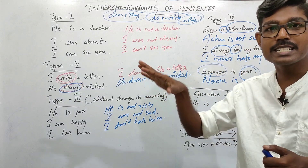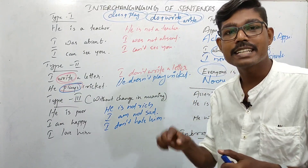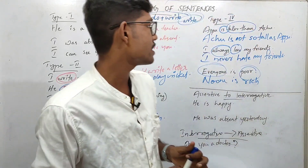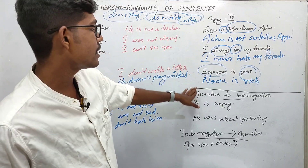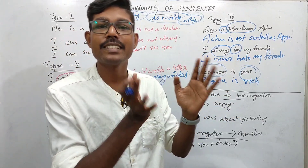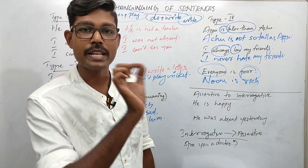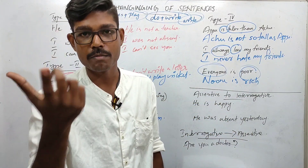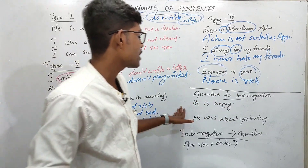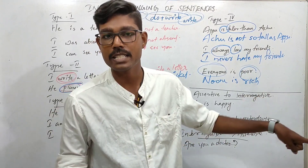Here we learn 4 types — 4 easy models. The first thing is assertive and interrogative, or we can talk about interrogative and assertive. A statement can be changed into a question. Assertive to interrogative.